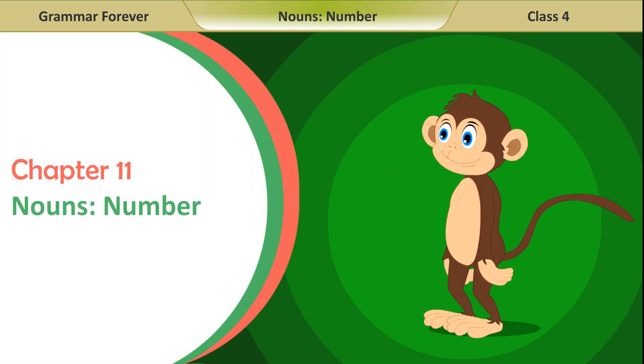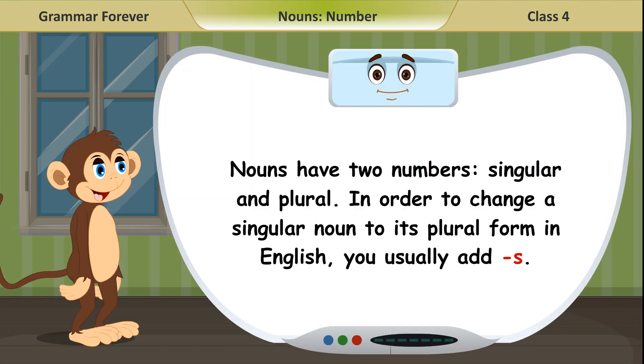Chapter 11. Nouns Number. Nouns have two numbers, singular and plural. In order to change a singular noun to its plural form in English, you usually add S.